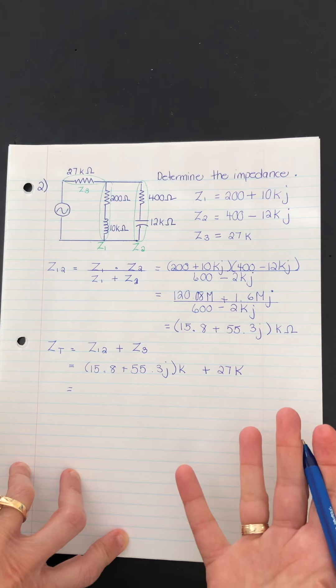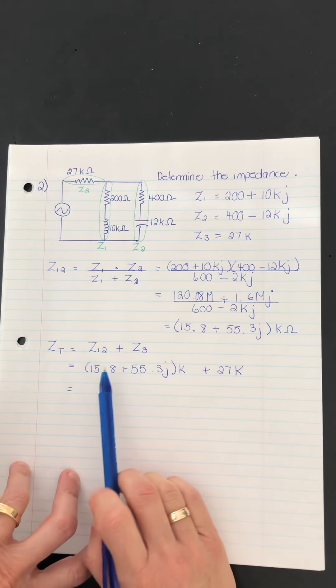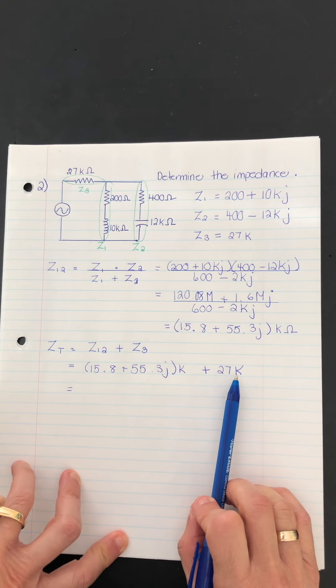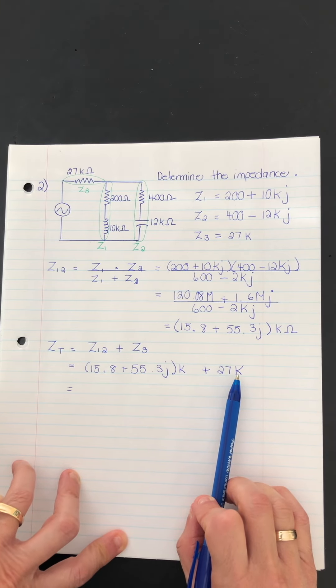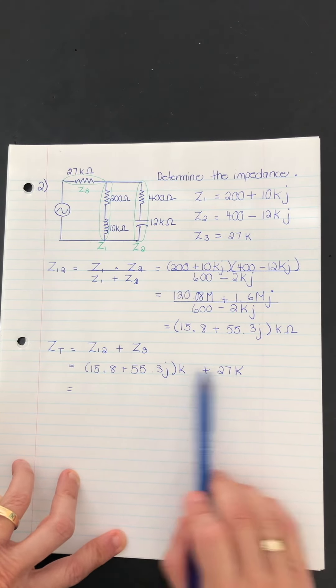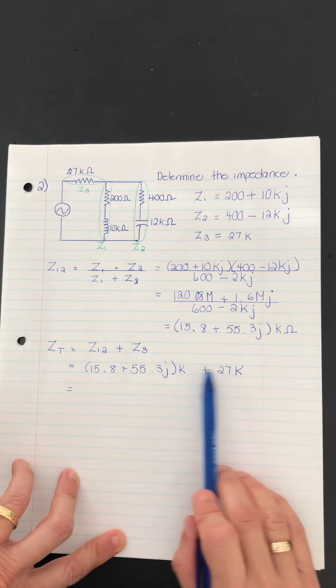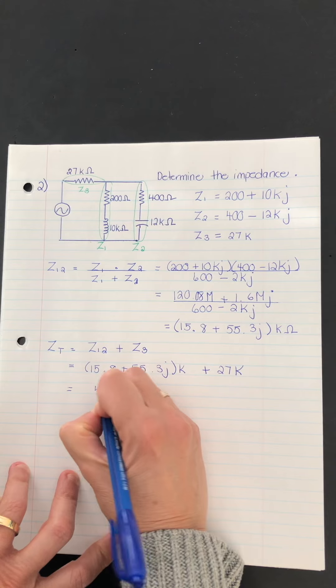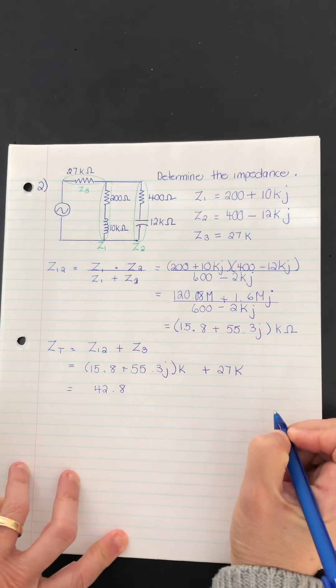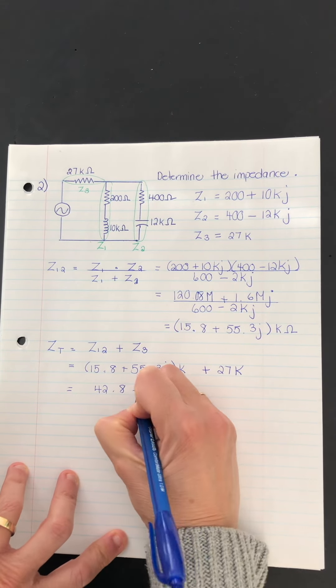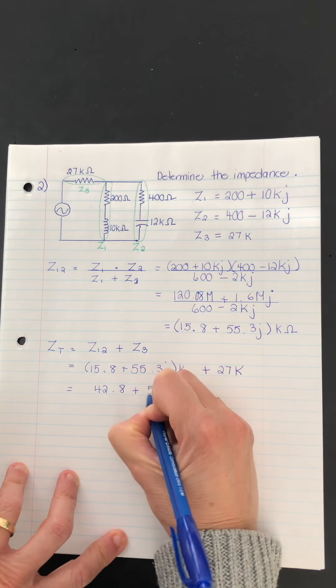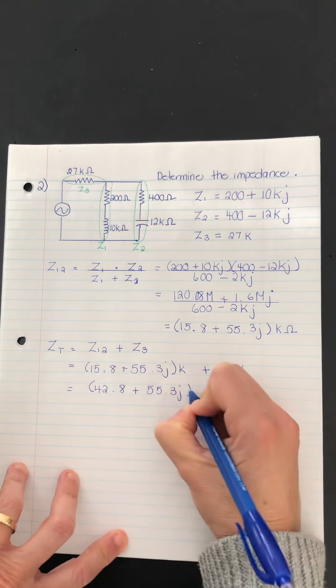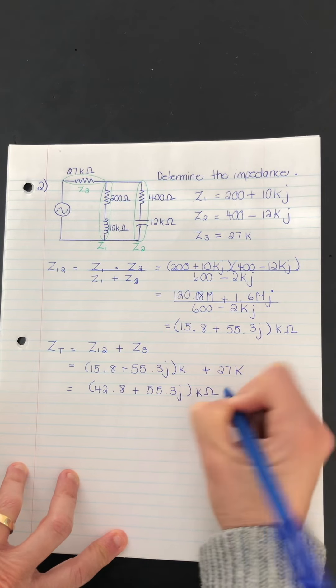So what I'm going to do to find Z total is take our Z12 value, which was right here, and add the real number, which is 27 kilo to that. So again, it's like collecting like terms. All I really have to do is take 15.8 kilo and add 27 kilo to it. So taking the sum of 27 and 15.8 gives me 42.8. So that would be kilo ohms. The imaginary part won't change here. And that's it.